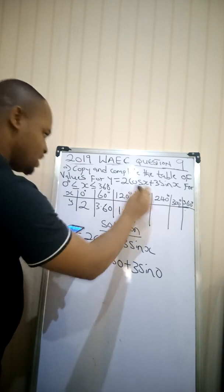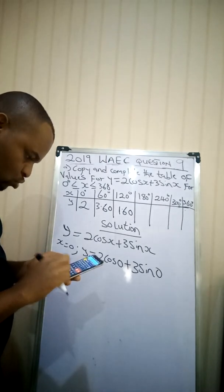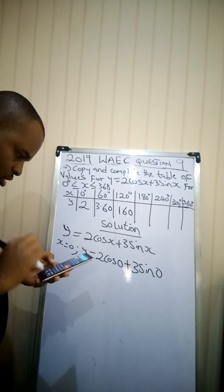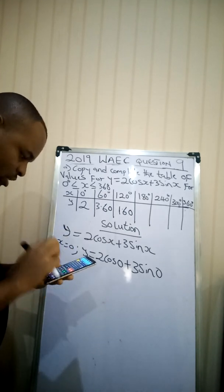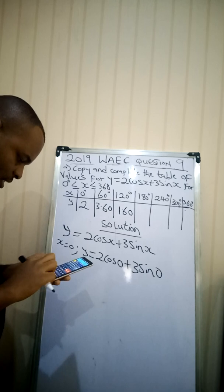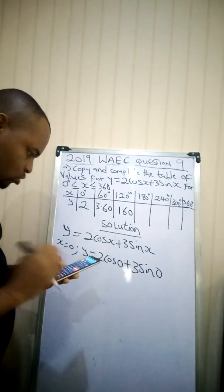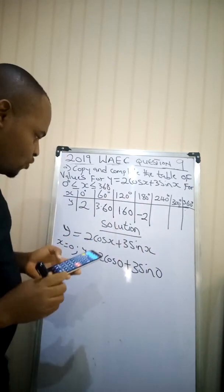The next one is 180. I'll have 2 multiplied by cos(180) plus open bracket of 3 multiplied by sin(180). Close the brackets. Equal to. I have this as negative 2.